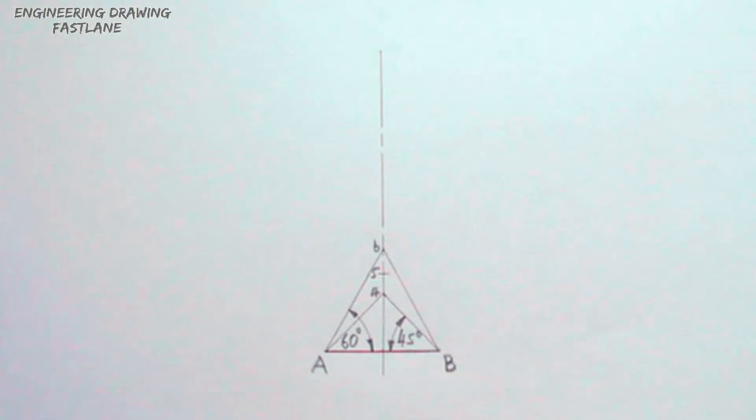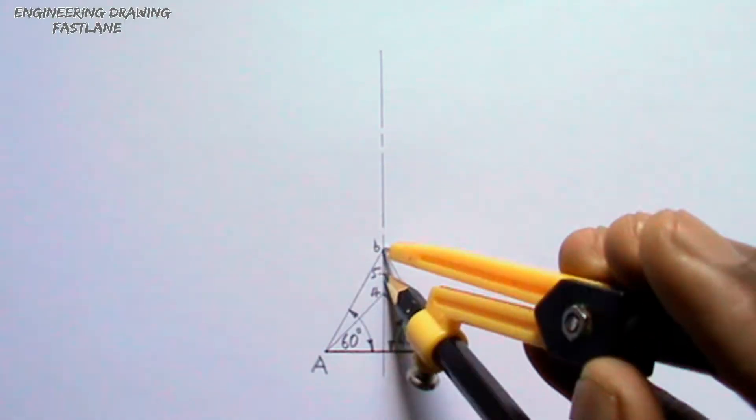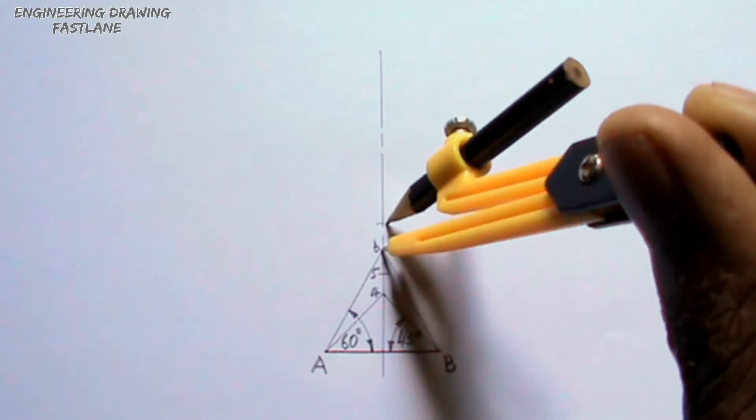Mark off three more points from point 6 on the vertical line. These points should have equal interval as point 4, 5 and 6.